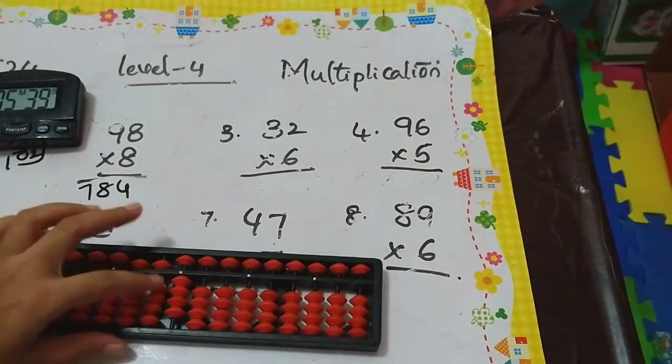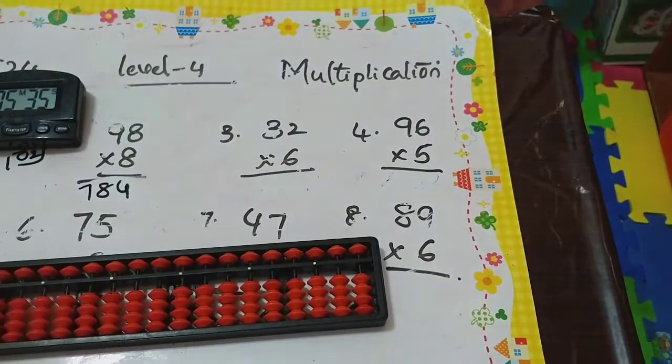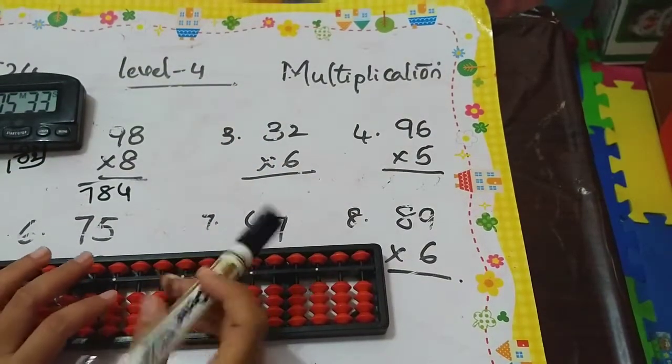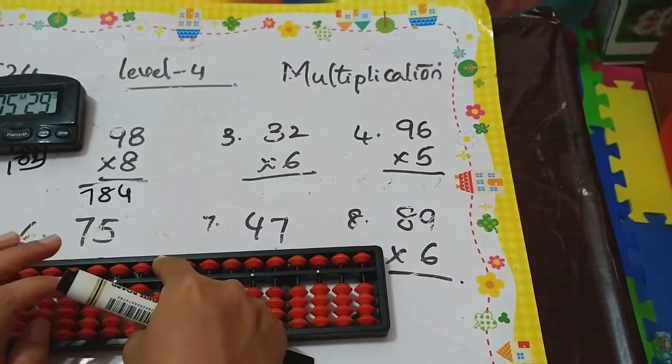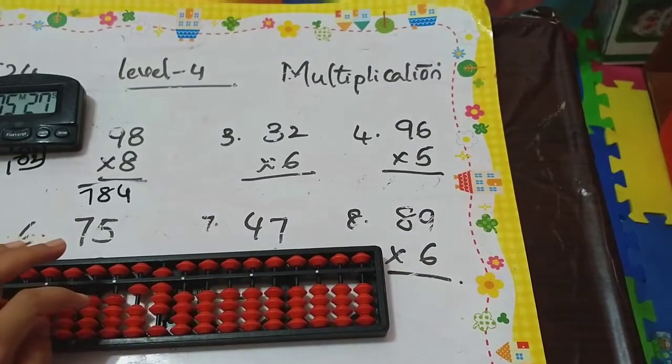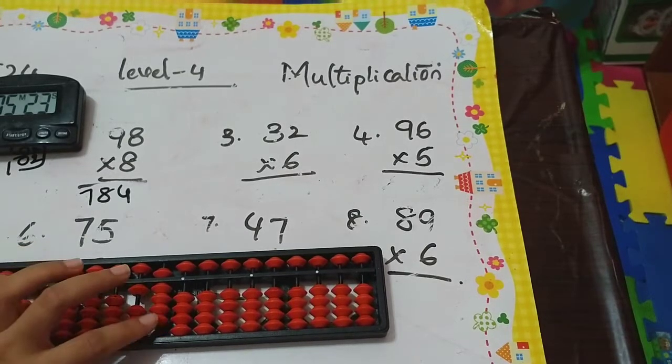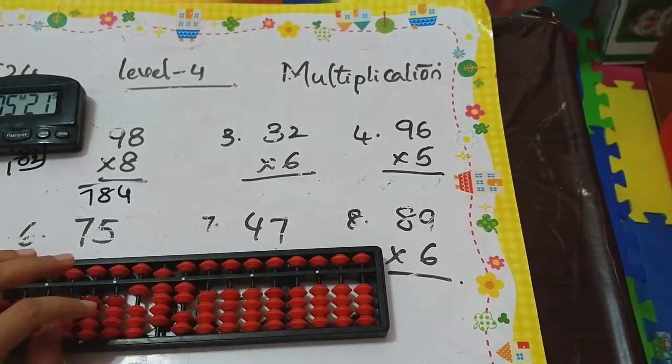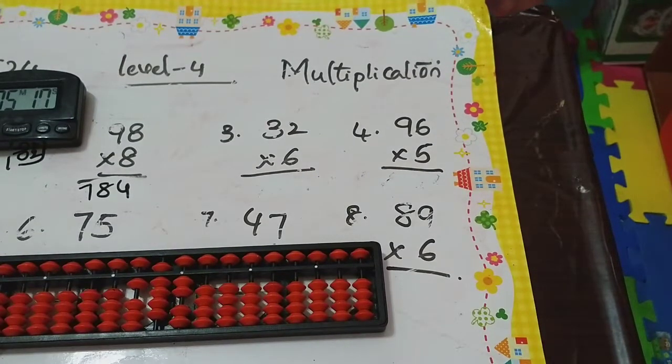What's the answer I got? 784. Next one: 32 times 6. So 6 threes are 18—same principle I'm using 3 columns: 18. 6 twos are 12: 1, 2. So what's the answer? 192.